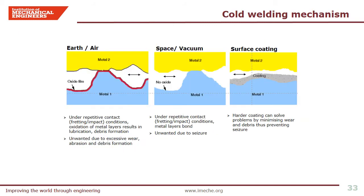Now let's look into how the cold welding mechanism occurs. In earth and air, under repetitive contacts of fretting or impacts, destruction of the natural oxide layer results in lubrication, debris formation or excessive wear. In space or vacuum conditions, under the same repetitive contacts, the oxide layer does not heal and as a result two metals bond together causing unwanted seizure by sticking. The use of a hard and durable coating can solve various problems including minimising wear, debris formation and sticking by cold welding.